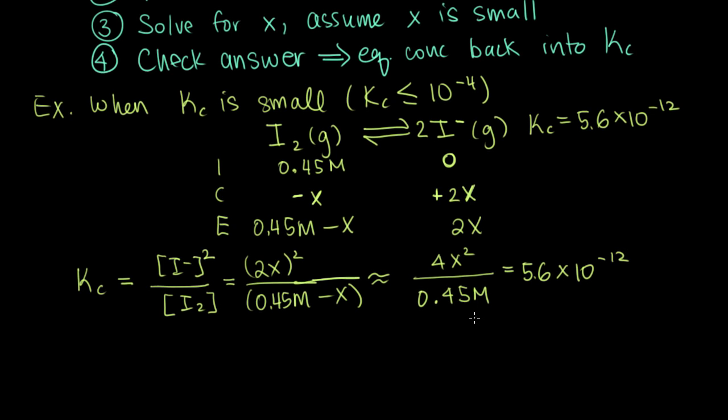Now what we can do is multiply both sides by 0.45, and divide both sides by 4. What that gives us is that x squared is equal to 6.3 times 10 to the minus 13. If we take the square root of this, we get that x is equal to 7.9 times 10 to the minus 7 molar. So that is what we get for x.